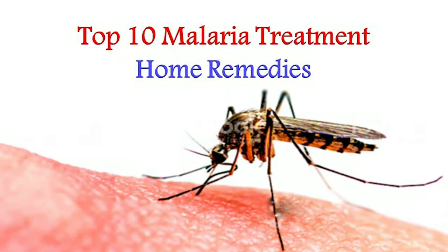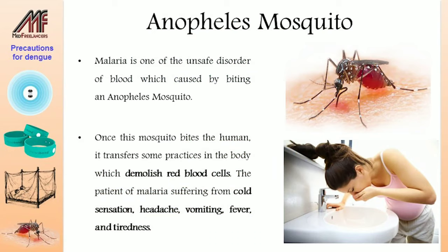In this video you will know what malaria is and the top 10 treatments of malaria at home. Dear friends, you must go to a doctor if the situation is out of control. Malaria is one of the unsafe disorders of the blood, caused by the bite of an Anopheles mosquito. Once this mosquito bites a human, it transfers parasites into the body which destroy red blood cells.